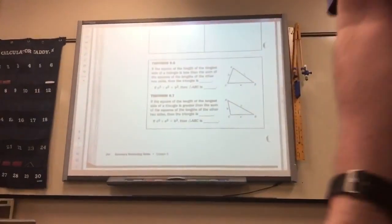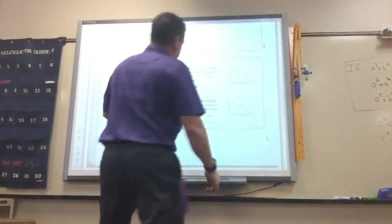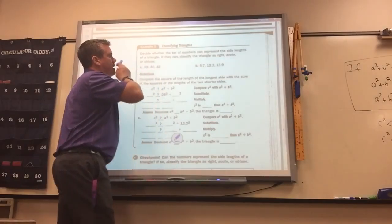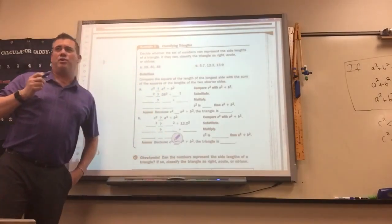You've got to say whether the triangle is right, acute, or obtuse. So they're just going to give you three lengths. Now they're not always going to be in order though.